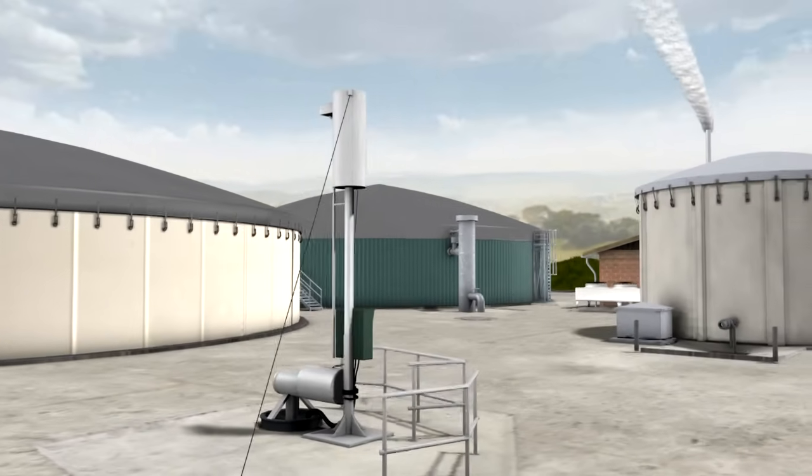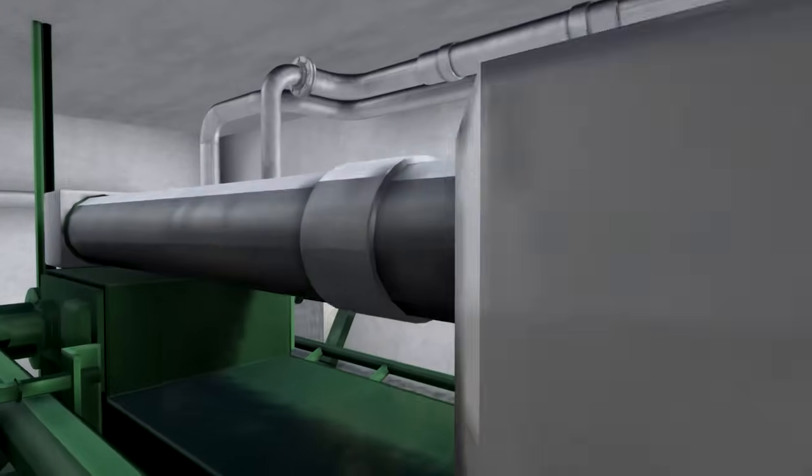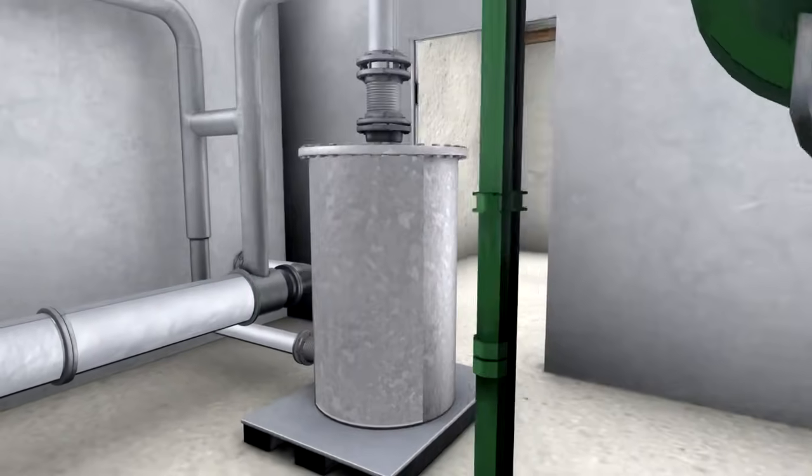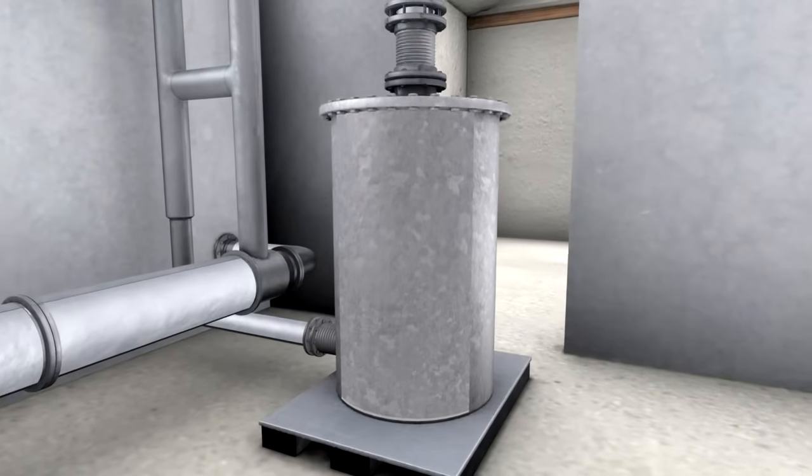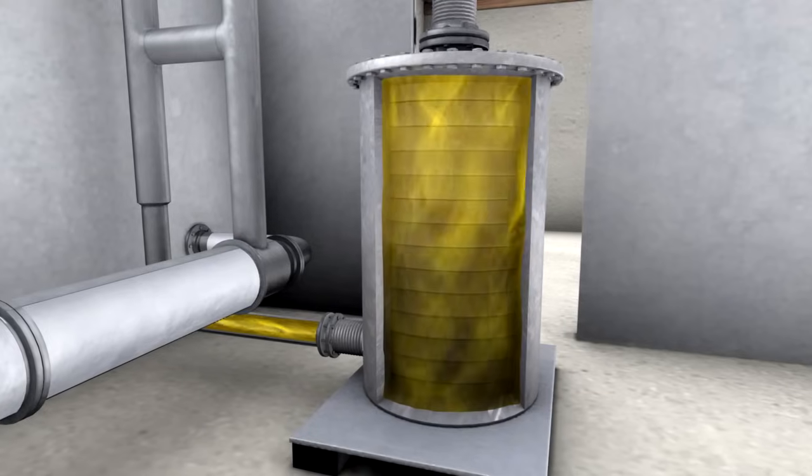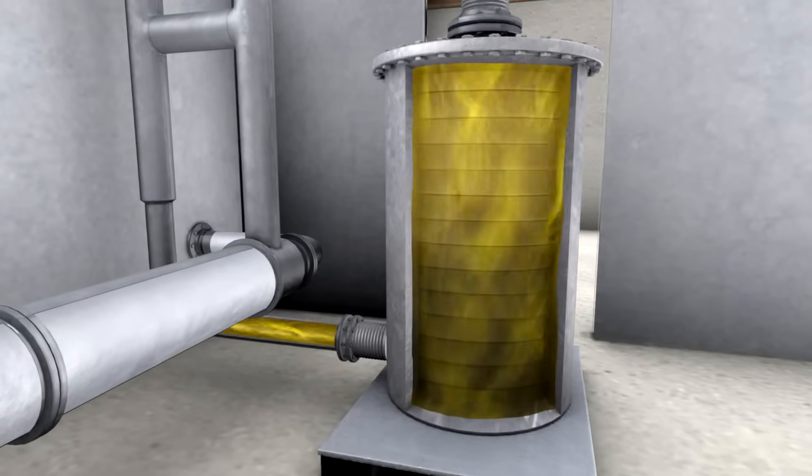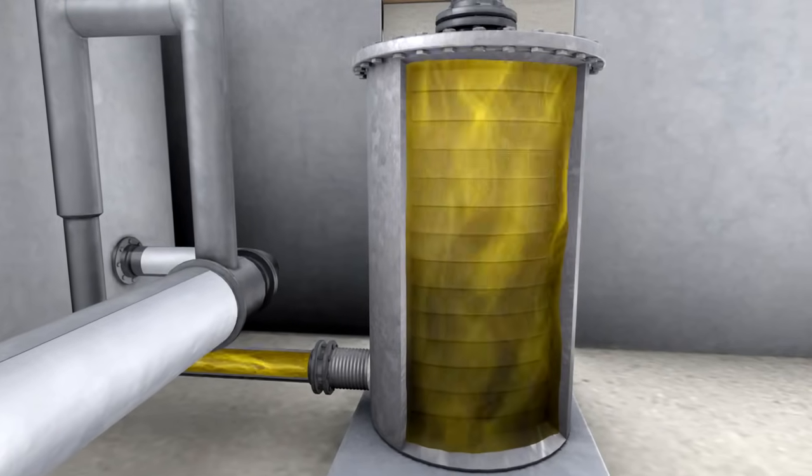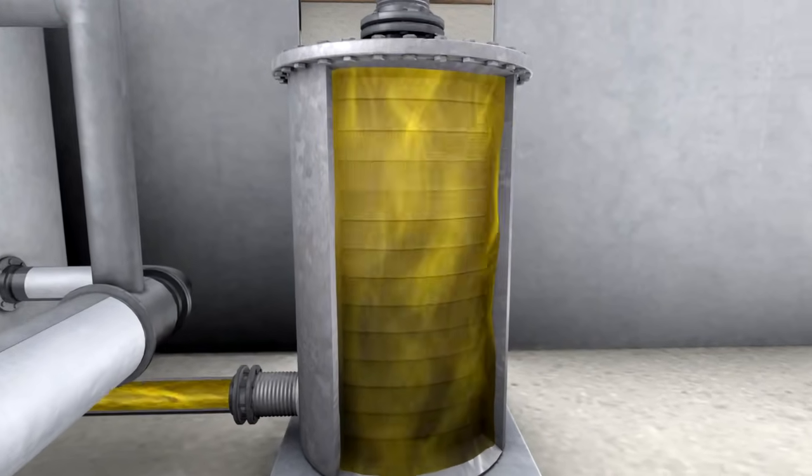Before the biogas is fed to the combined heat and power plant for combustion, it passes through an activated carbon filter. The filter serves for removing the remaining hydrogen sulfide from the already desulfurized biogas. The concentration of hydrogen sulfide is measured so that you know in advance when the activated carbon filter is fully loaded and must be replaced.